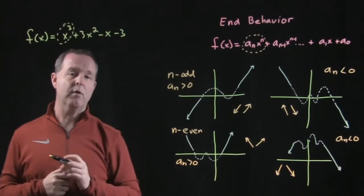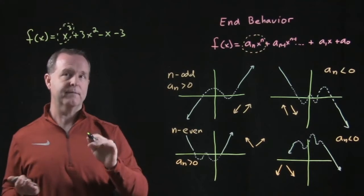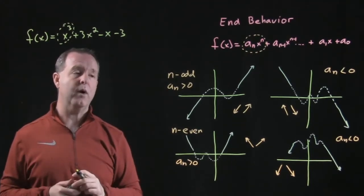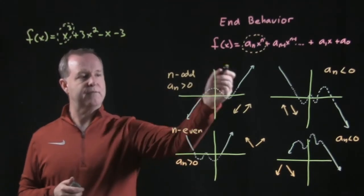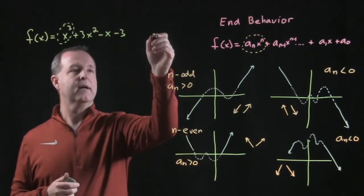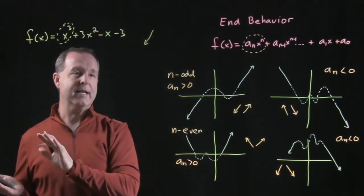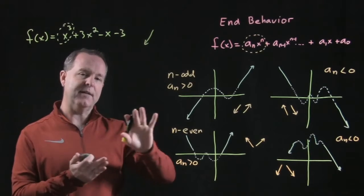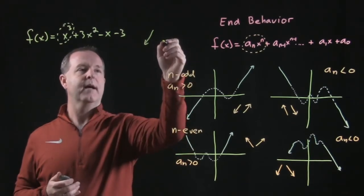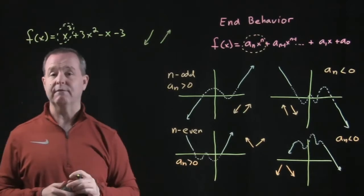Then we look at the coefficient of that x cubed. Is it positive or negative? In this case, it's positive. There's an understood one right there. So it fits in this first idea right here, where its end behavior then begins with small values at the beginning of the graph or at the beginning of the function. And as the function continues to move out, at some point, it's going to end with increasing values.